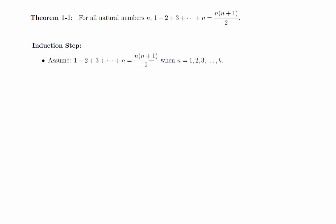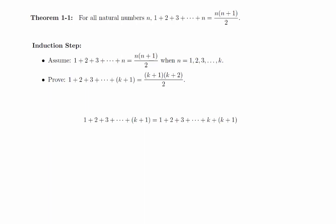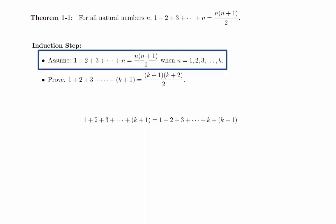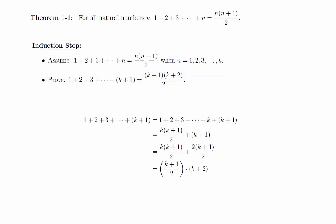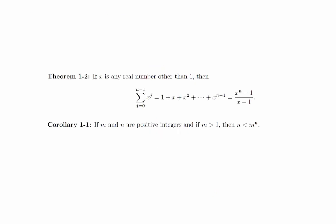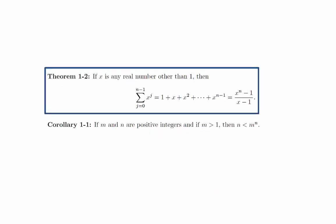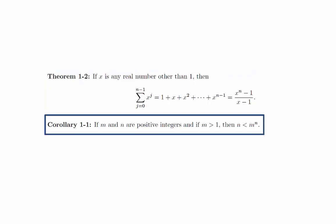For the induction step, the inductive hypothesis is that the formula holds for all integers from 1 to k, and we want to prove that the equation holds for k plus 1. Everything from here is just algebraic manipulation. First, we will rewrite the sum so that the kth term is explicit. Then we will use the inductive hypothesis and replace this part using this formula. We can pull off a k plus 1 over 2 from both terms to get the desired result. There are two more statements that we will prove in class: the formula for the sum of the terms in a finite geometric sequence, and an observation we will use in the next section.